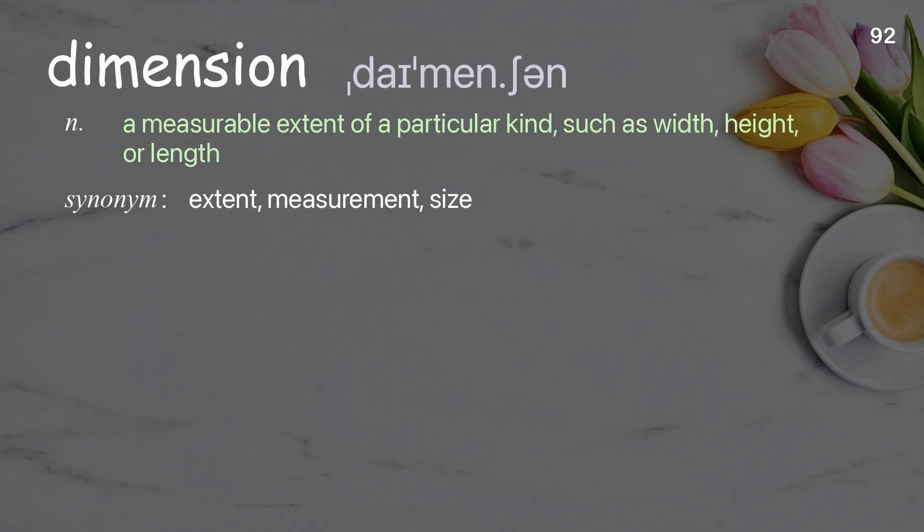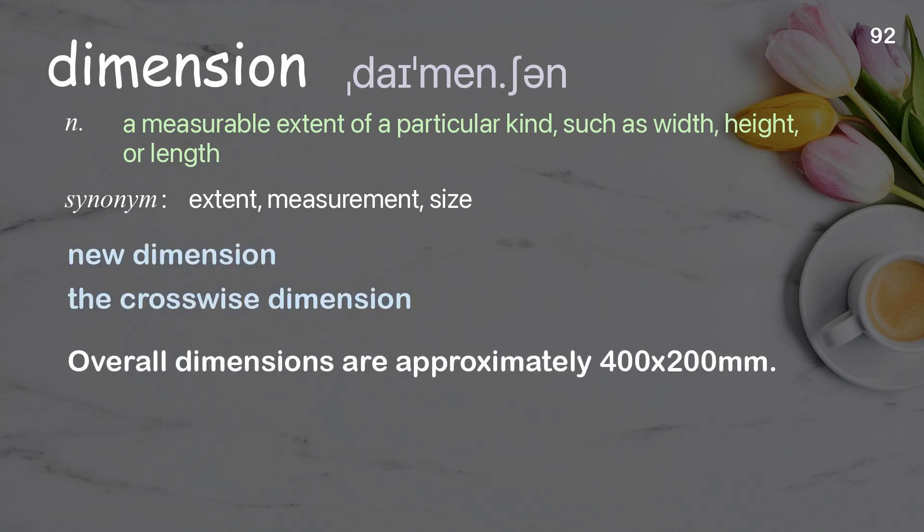Dimension: a measurable extent of a particular kind, such as width, height, or length. Examples: new dimension, the crosswise dimension. Overall dimensions are approximately 400 by 200 millimeters.